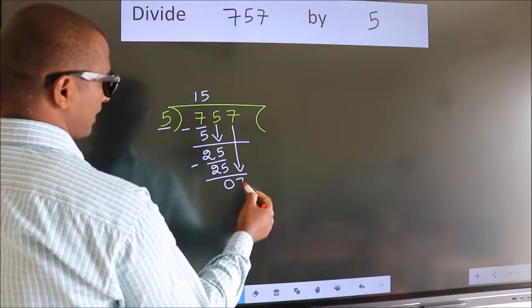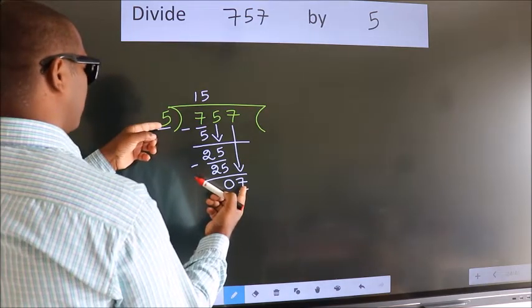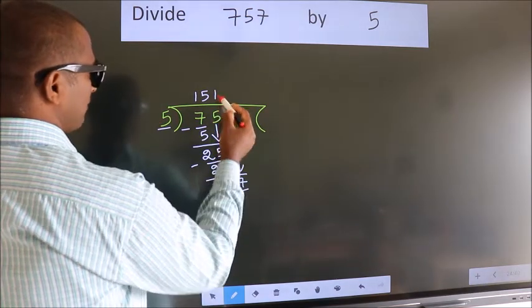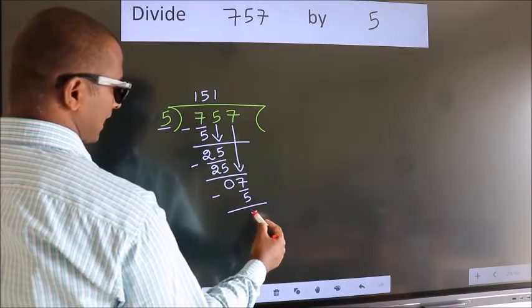So, 7 down. So, 7. A number close to 7 in 5 table is 5 once 5. Now we subtract. We get 2.